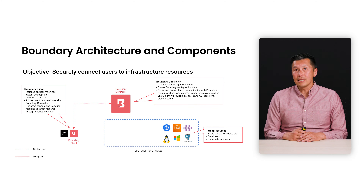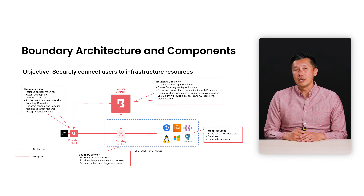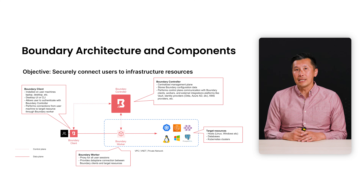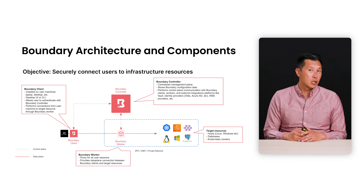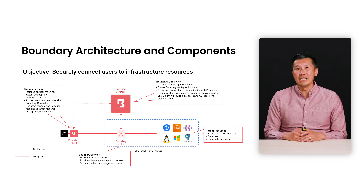And lastly, we have the Boundary Workers. Boundary Workers can be VMs, containers, or anything that can run our Go binary, and they act as the proxy for all user connections to their targets. Depending on the organization's network topology, there could be multiple workers, but for simplicity we'll just show a single worker in our diagram here.